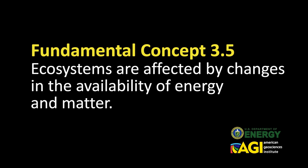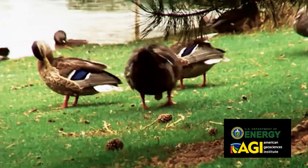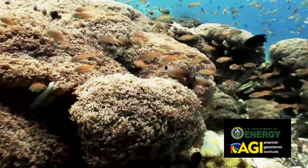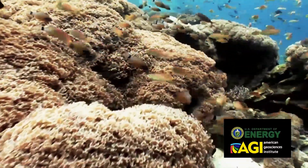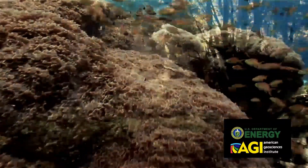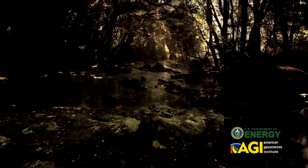Ecosystems are affected by changes in the availability of energy and matter. The amount and kind of energy and matter available constrains the distribution and abundance of organisms in an ecosystem and the ability of the ecosystem to recycle materials.